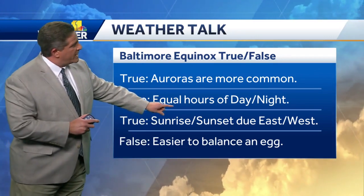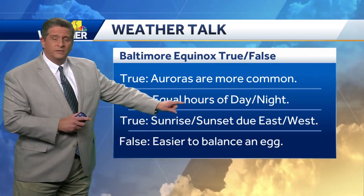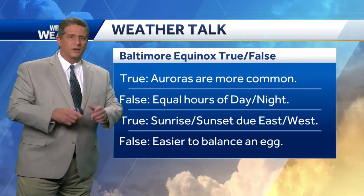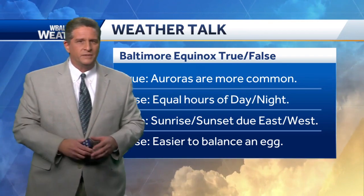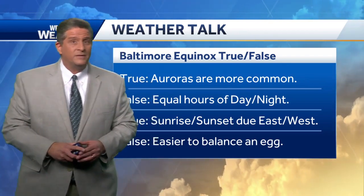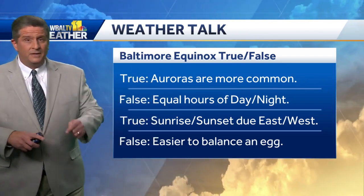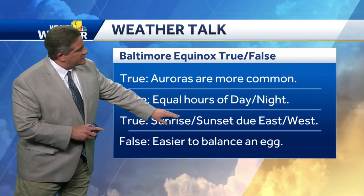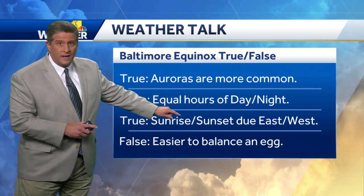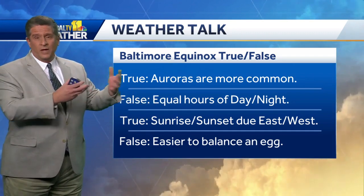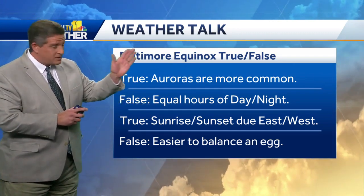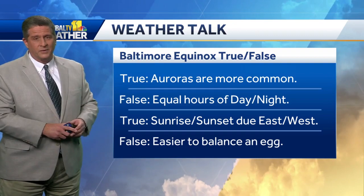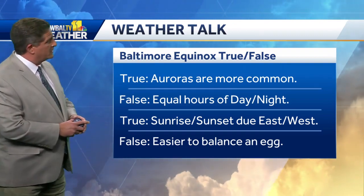It is not true that we have equal hours of day and night, at least not according to how we measure sunrise and sunset. The closest to 12 and 12 for us here in Baltimore is actually on the 17th, not today on the 20th. It is true that the sunrise and sunset are due east and west on this date everywhere. If you go out and look at the sunset this evening, it'll be right at 270 degrees on the horizon — due west when the sun goes down this evening.